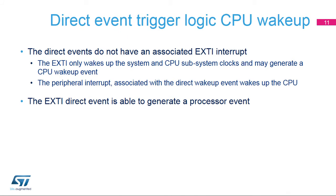A direct event is able, through the EXTI controller, to generate a CPU event and trigger a system wake-up. The active edge of direct events is the rising edge. Direct events do not rely on the EXTI controller to assert interrupt requests because they have their dedicated lines to the NVIC. Otherwise, the same circuit as described in the previous slides is implemented. Direct events can be independently masked for event generation and interrupt generation. The interrupt mask is only used as a wake-up mask.